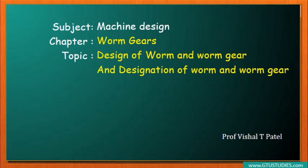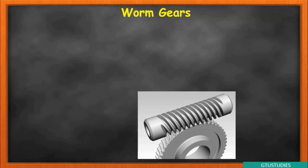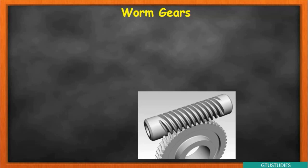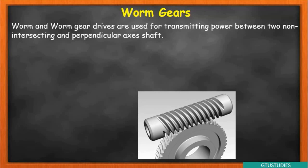Now today we will understand the design procedure. First, a basic idea about worm and worm gear: there are two components — unlike spur gear, helical gear, or bevel gear where both are circular (one gear and one pinion), here the upper component is cylindrical, called the worm, and the lower circular component is called the worm gear. The purpose is the same — to transmit power and motion — but here motion transmits from the worm (driving member) to the worm gear (driven member).